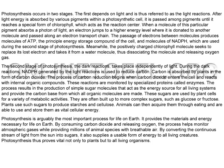When a molecule of this particular pigment absorbs a photon of light, an electron jumps to a higher energy level, where it is donated to another molecule, and passed along an electron transport chain. The passage of electrons between molecules produces molecules of ATP, the principal energy storage compound of the cell, and molecules of NADPH, which are used during the second stage of photosynthesis.